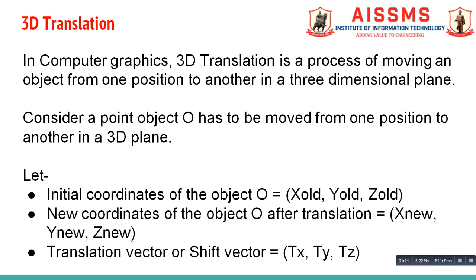Now, let us see what is 3D translation. In computer graphics, 3D translation is a process of moving an object from one position to another in a three-dimensional plane. Consider a point object O that has to be moved from one position to another in a 3D plane. We assume the initial coordinates of object O as X old, Y old, Z old, and new coordinates after translation as X new, Y new, Z new.